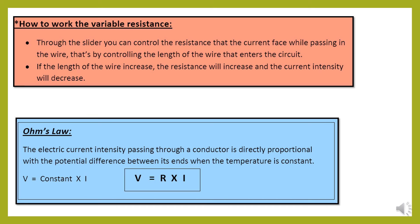How to use the variable resistance? By using slider, you can control the resistance that the current face while passing in the wire. That's by controlling the length of the wire that enters the circuits. If you increase the length of the wire, the resistance will increase and the current intensity will decrease.